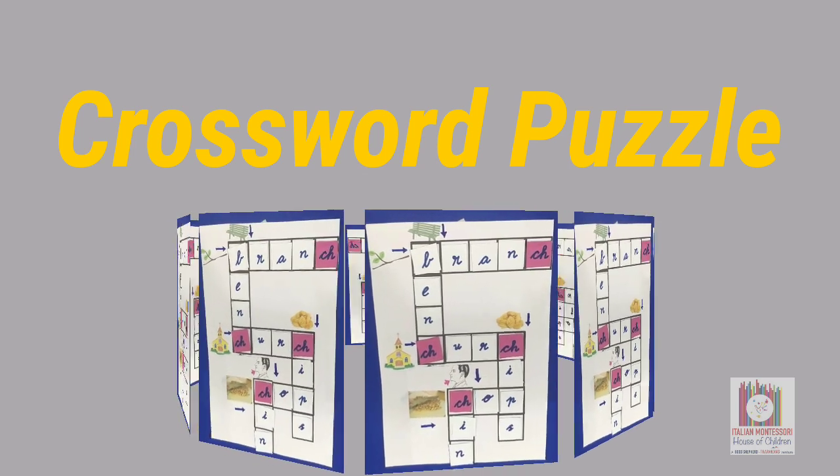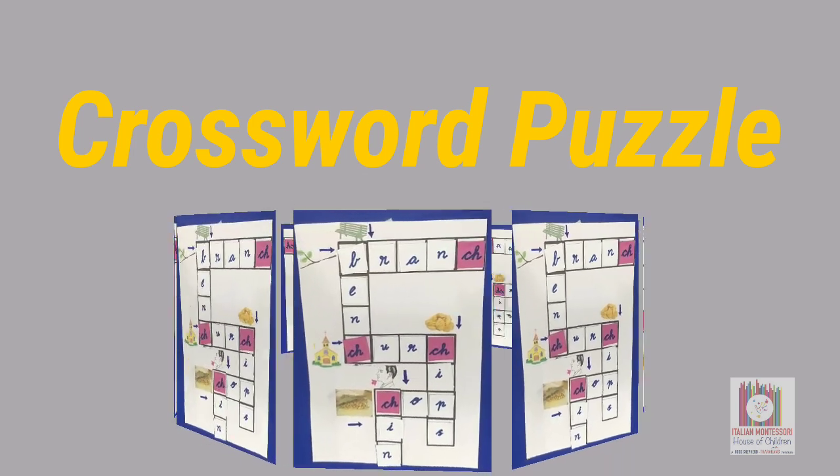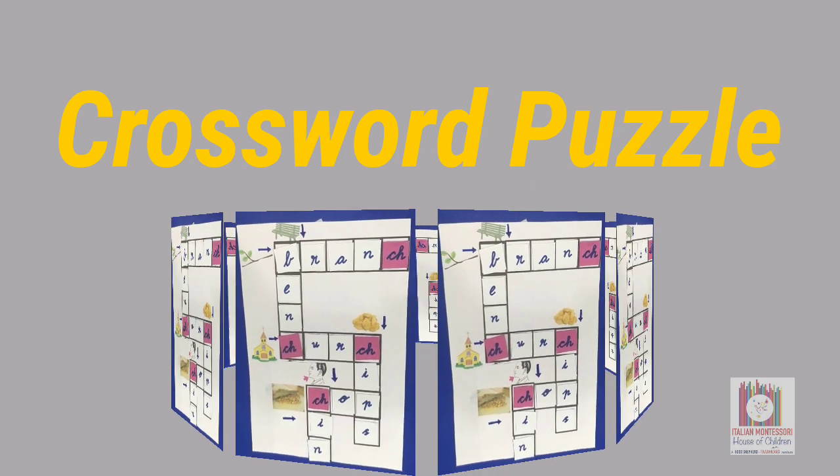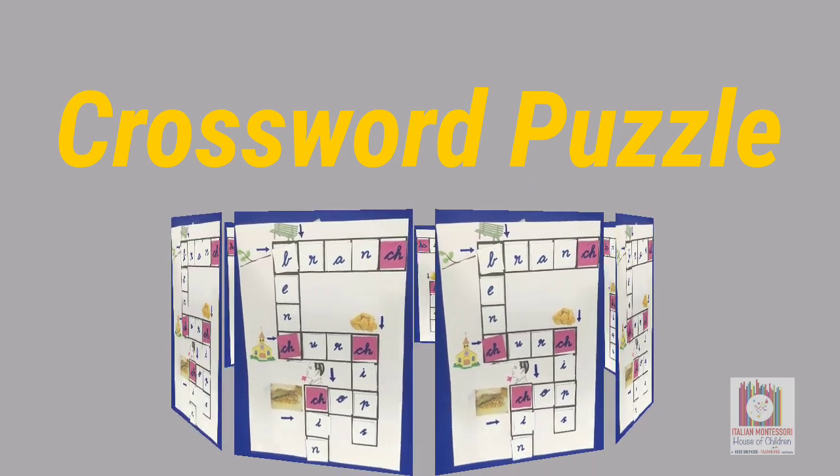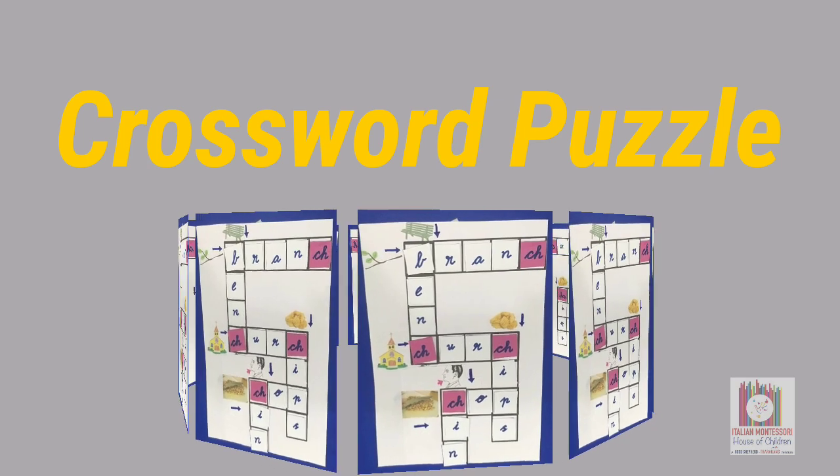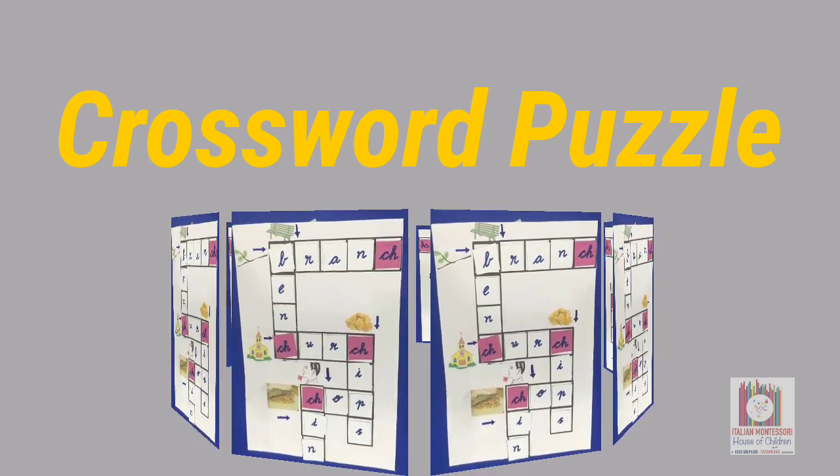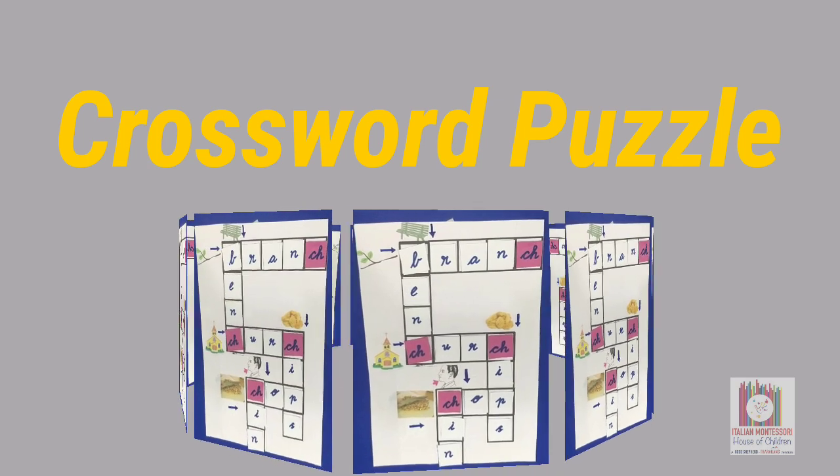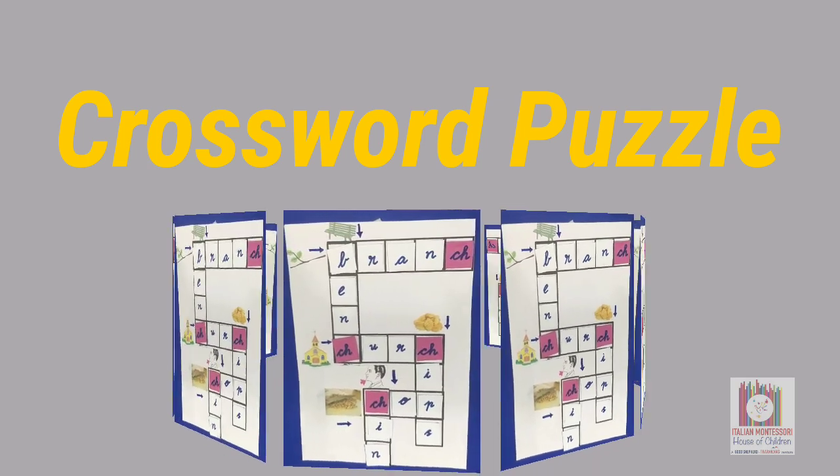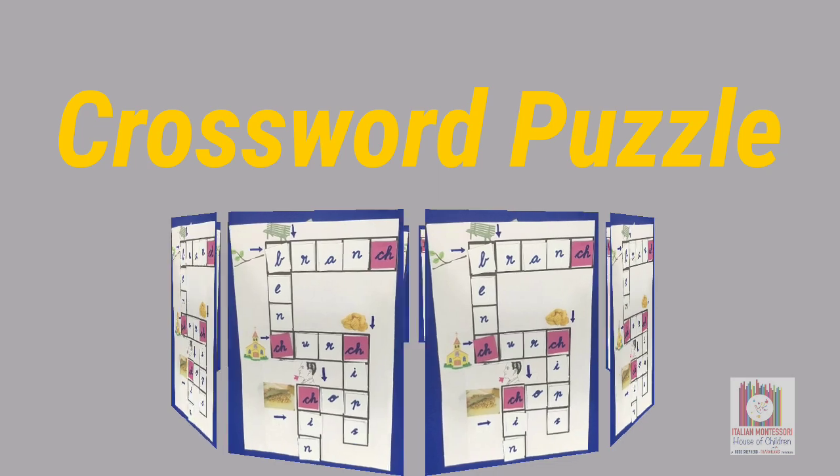A crossword is a word puzzle that usually takes the form of a square or rectangular grid of white and black shaded squares. The game's goal is to fill the white squares with letters forming words or phrases by solving clues which lead to the answer.